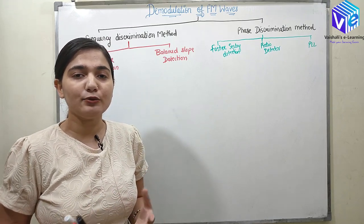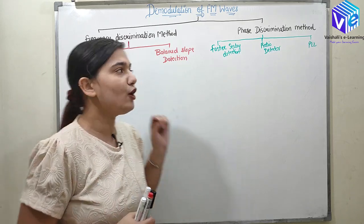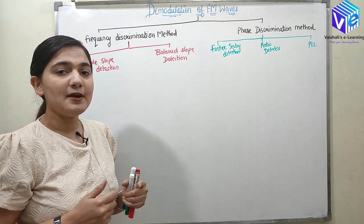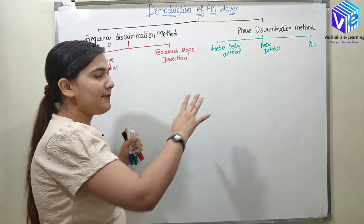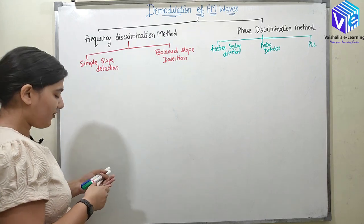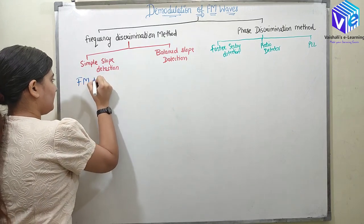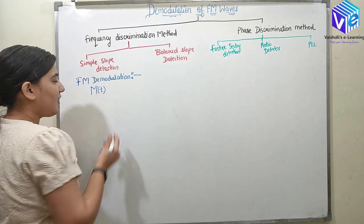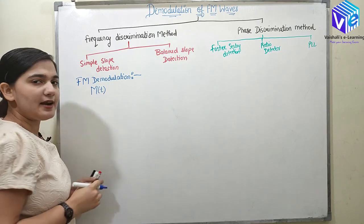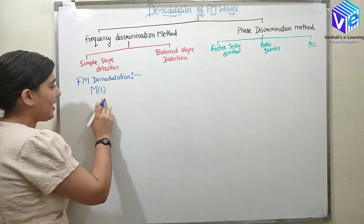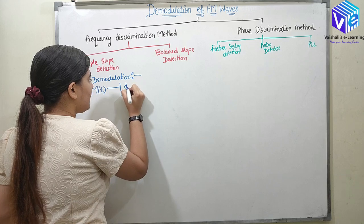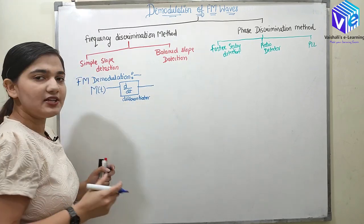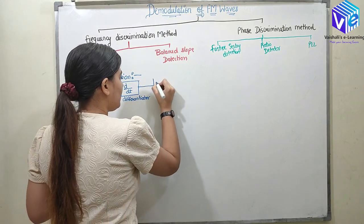In this video I am going to explain the generalized way to demodulate FM — what is happening in all of these techniques. The block diagram of the FM demodulator receiver has the modulated signal M(t) fed to a differentiator, and this differentiator is connected to an envelope detector, which gives out the message signal X(t).